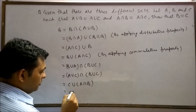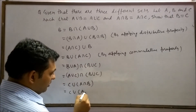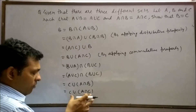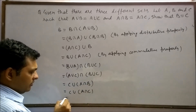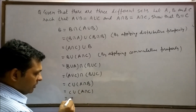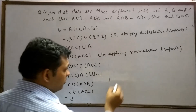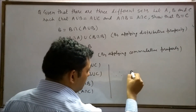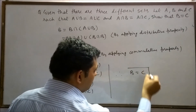We get C union A intersection C. This result is equal to set C. Therefore, set B is equal to set C. Hence proved.